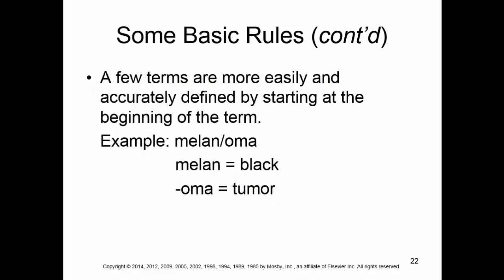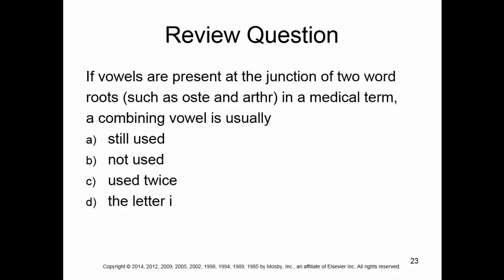A few terms are more easily defined by starting at the beginning of the term. For example, melanoma: melan means black, oma means tumor, and we usually refer to this as a black tumor, not a tumor black. So the easiest approach is to always start with the end first, and if it doesn't make sense, then switch it — because we're not going to follow the rules 100% of the time with medical terminology anyway.